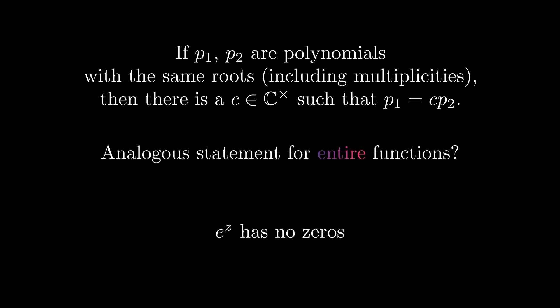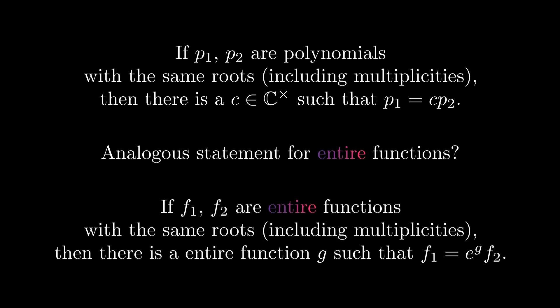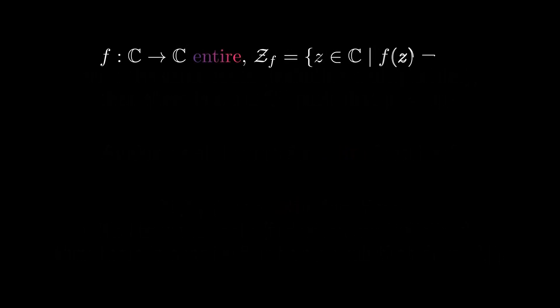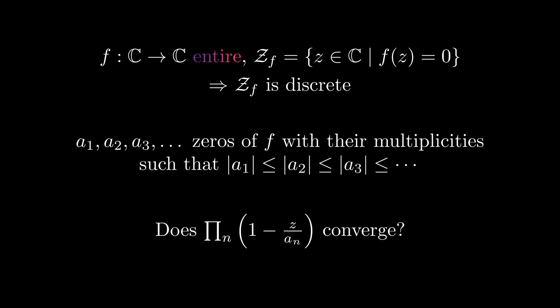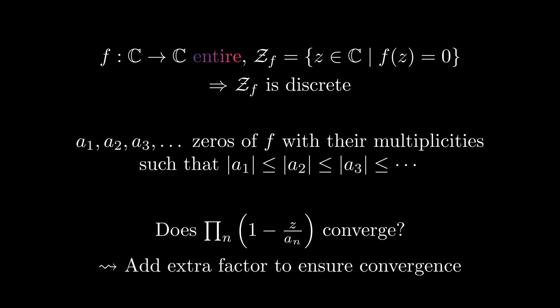As there are non-constant entire functions without any zeros, the obvious analog does not hold. Instead, we have that if two entire functions have the same zeros, then they differ by an exponential factor. For polynomials the zero set is always finite, so how does it behave for entire functions? Here, the zero set is always discrete, so there are no accumulation points. This is a consequence of the identity theorem. As the zero set is discrete, we can list all the zeros in order of their magnitude. We can now try to form a product with these zeros. Unfortunately, this product does generally not converge. We can fix this by adding extra factors which don't add any zeros, which enforce convergence.